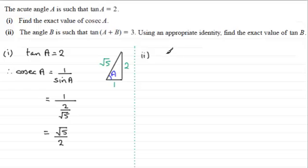Well, if we know that the tan of A plus B equals 3, we also know an identity, or should do anyway, for the tan of A plus B.